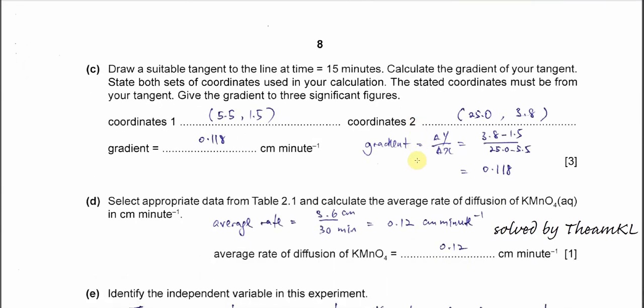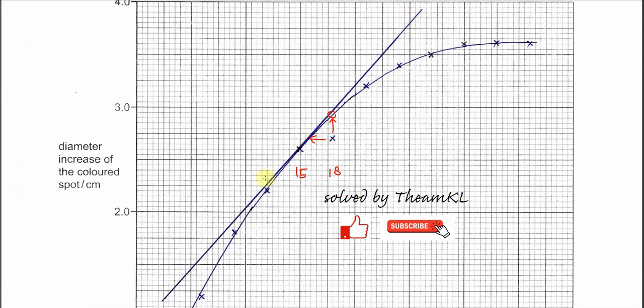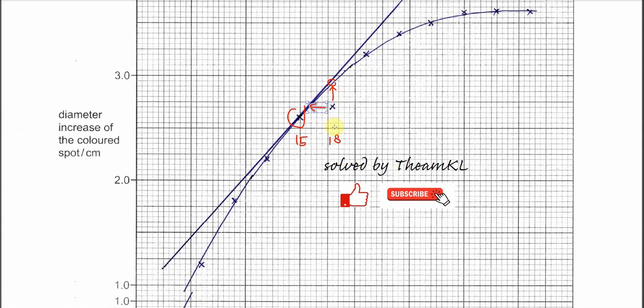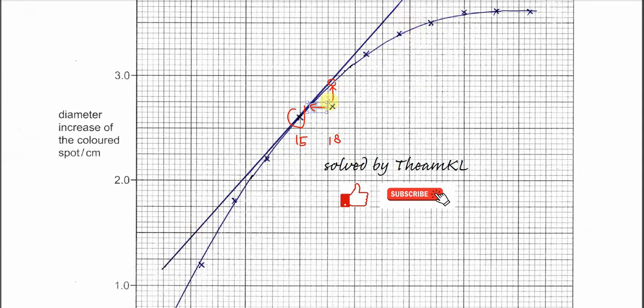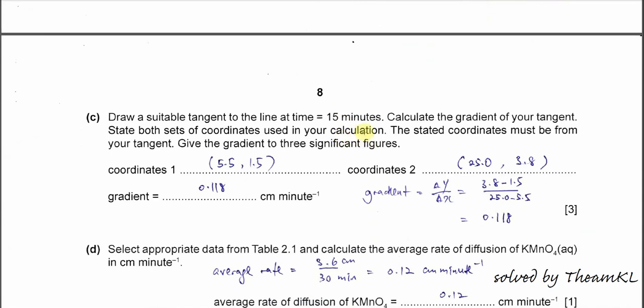This one is really based on your graph. Draw a suitable tangent to the line at time equal to 15 minutes, calculate the gradient of your tangent. Show the coordinates 1 and 2 and calculate the gradient, Δy over Δx. For mine, draw the tangent at 15, after that you must get two coordinates from the line. After that, you get your own values. For mine, I get 0.118 cm per minute. Just use Δy over Δx.